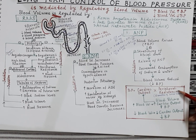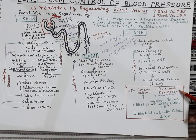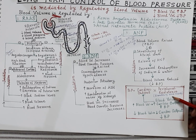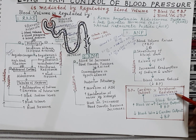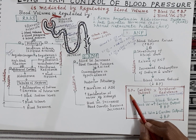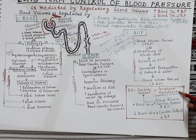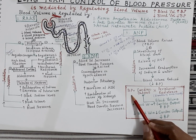Peripheral resistance also depends upon a number of factors. One of the most important factors is the diameter of blood vessels. If diameter of blood vessels kam hota hai, if there is vasoconstriction, then the peripheral resistance increases and blood pressure increases. But if blood vessels dilate, there is increase in the diameter of blood vessel, then the peripheral resistance reduces and therefore the blood pressure also reduces.